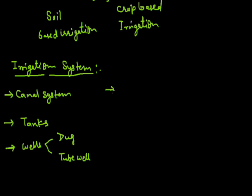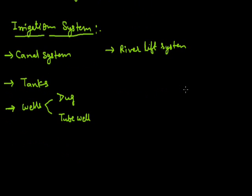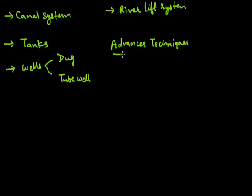Another important system is the river lift system. These are the old or general techniques for irrigation. Now, the advanced technology or advanced techniques used for irrigation — the first advanced technique is the sprinkler system. The sprinkler system is an advanced technique for irrigation used in uneven land.